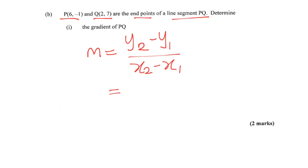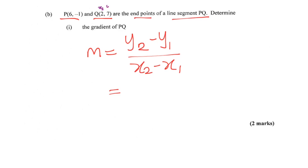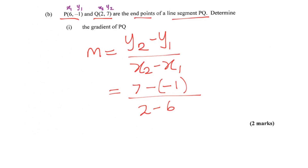What I do is I write x2, y2 on one point and I write x1, y1 on the other point, so I know exactly which one to substitute. So y2 is 7 minus y1 which is negative 1 — pay attention to the signs. And x2 minus x1 is 2 take away 6, which gives me 8 over negative 4.